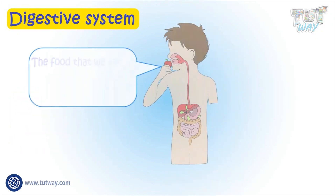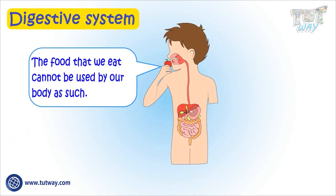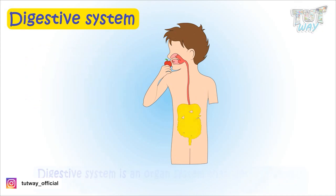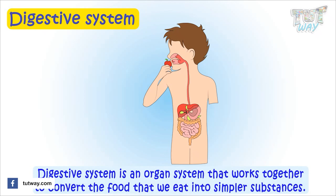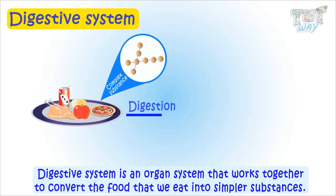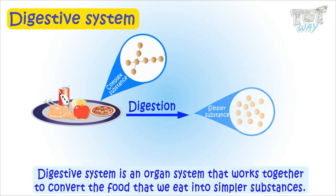The food we eat cannot be used by our body as such. The digestive system is an organ system that works together to convert the food that we eat into simpler substances or nutrients that can be used by the body for growth and maintenance.